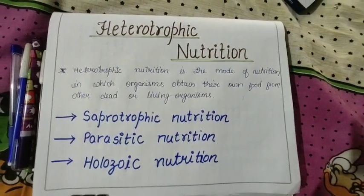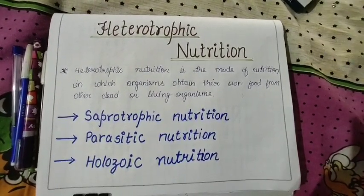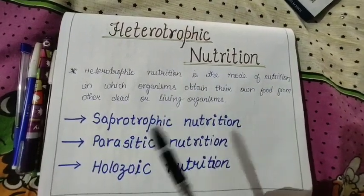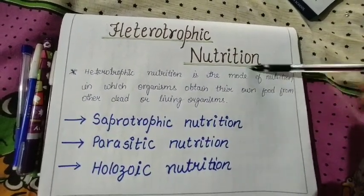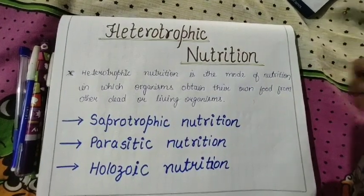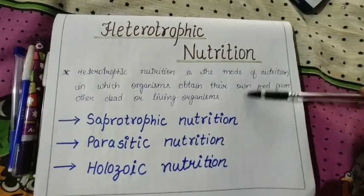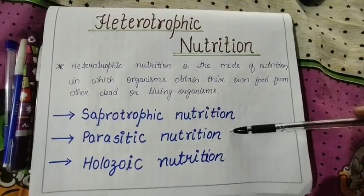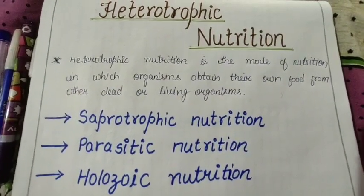Today I am going to discuss one subtopic from chapter number six, Life Processes, in class 10th, which is heterotrophic nutrition. In heterotrophic nutrition, it is a mode of nutrition in which organisms obtain their food from other dead or living organisms. They are consumers, and producers are plants, so they depend on plants directly or indirectly. There are three types: saprotrophic nutrition, parasitic nutrition, and holozoic nutrition.